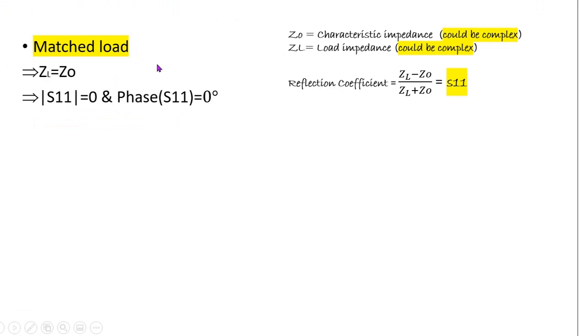What about the short termination? Short termination implies your ZL equal to zero. That means you are directly connecting your transmission line to the ground. And if ZL equal to zero, from this formula you can see we'll get S11 equal to minus one.